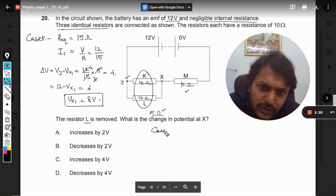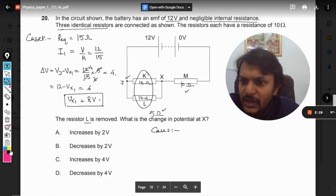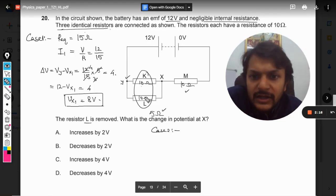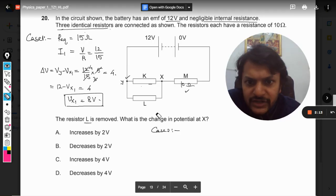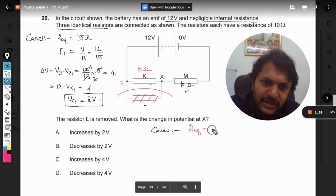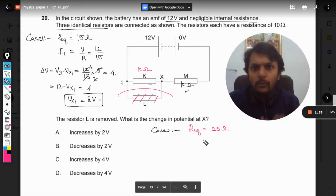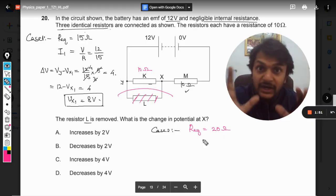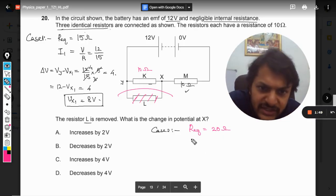Now we move to case number two. Now this resistance is not here, so this is cut off, this branch is not there. So only this 10 ohm and this 10 ohm is there. So what is the R equivalent now? In this case it is 10 plus 10 because they are in series, so it is going to become 20 ohm. So 10 plus 10 is 20.